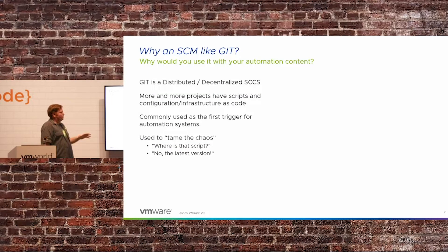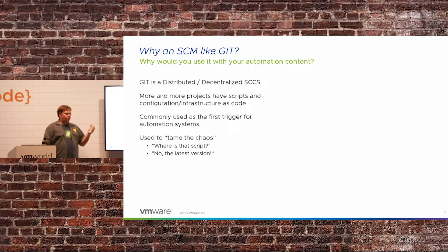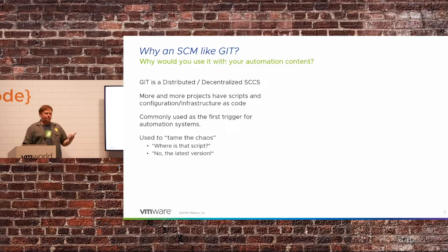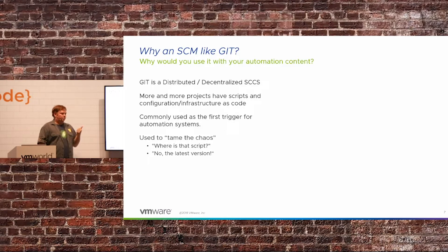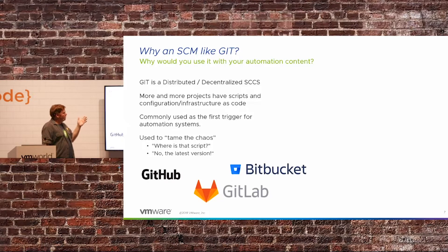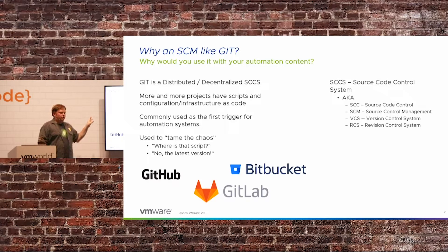So why would you want to use an SCM or source code management system like Git? More and more of our projects have code, scripts, and configurations that are text, and it's just going to continue growing. If your teams don't currently use a source repository for any of this stuff, you should consider it. A lot of times you can trigger automation with this as well, because source systems can trigger changes. And a lot of times you just want the latest version of whatever config or script you need — you don't want to dig through a file share to find which one's the latest.